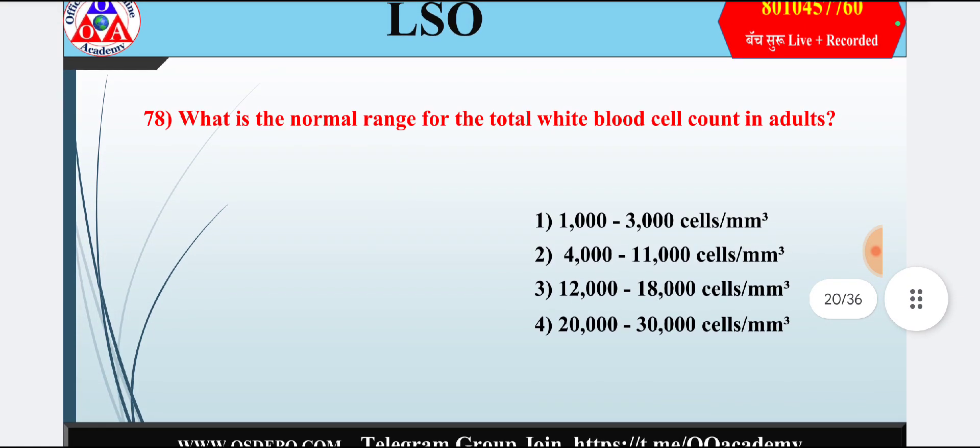Question 18: What is the normal range for the total white blood cell count in adults? Option 1: 1,000–3,000 cells; option 2: 4,000–11,000 cells; option 3: 12,000–18,000 cells; option 4: 20,000–30,000 cells. Answer is option 2 — 4,000 to 11,000 cells.